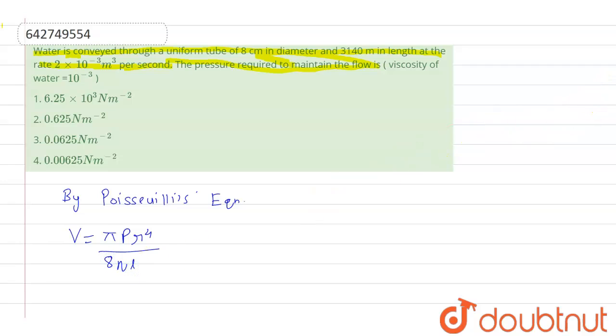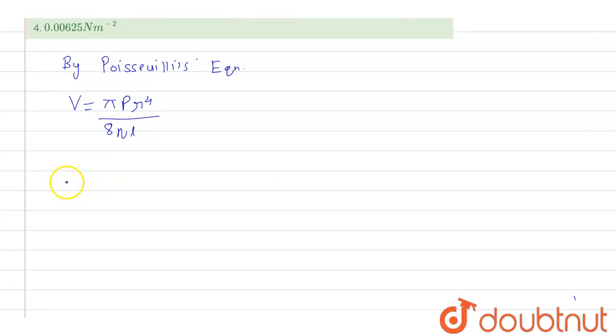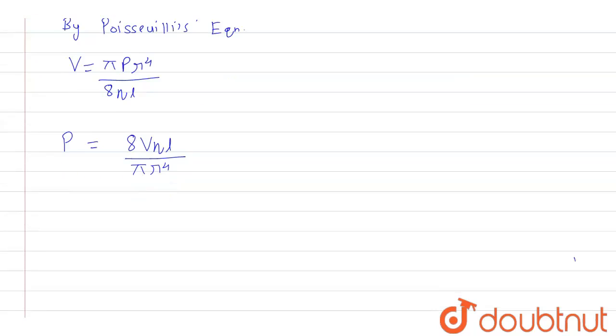So this is the equation. When we adjust this equation for pressure, then it will be 8 into v into eta into l by pi r to the power 4. The value is given, let's put all those values here.